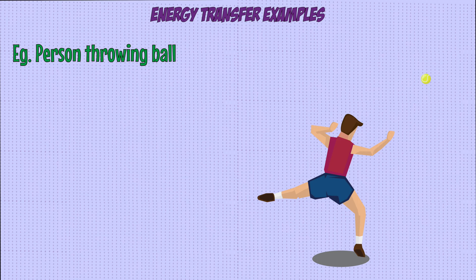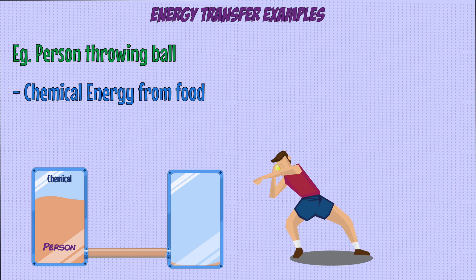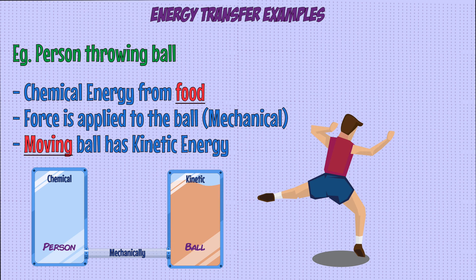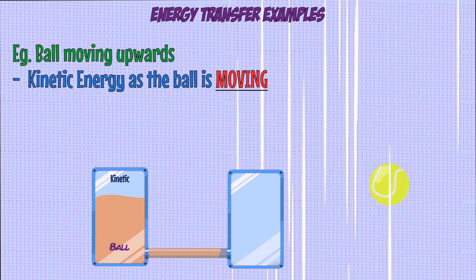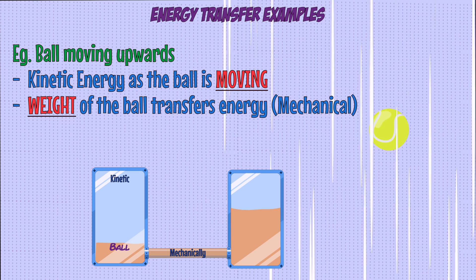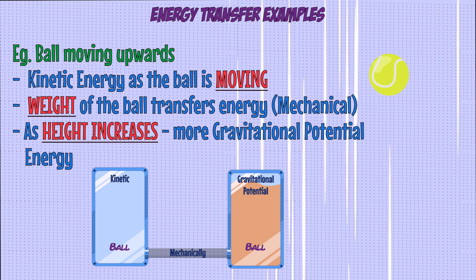Now let's look at some energy changes in common examples. Consider a system of a person and a ball being thrown upwards. The energy in the chemical energy store of the person from their food is transferred mechanically as a force is applied to the ball, going to the ball's kinetic energy store and making it move upwards. Looking at just the ball after it's been thrown, it starts with energy in its kinetic store but slows down as it gets higher — because energy is being transferred mechanically to its gravitational potential energy store as it rises.